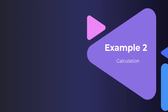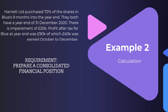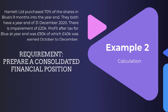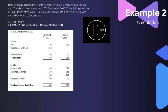Let's move on to example two. Harriet Limited purchased 70% of the shares in Blues nine months into the year end. Both have a year end of 31st December 2020. There's impairment of 20k, and profit after tax for Blue at year end was 90k, of which 40k was earned in October to December. At 30th September when Harriet acquired Blues, the statement of financial position showed PPE of 110k, current assets of 170k, share capital of 100k, retained earnings of 160k, and current liabilities of 20k.